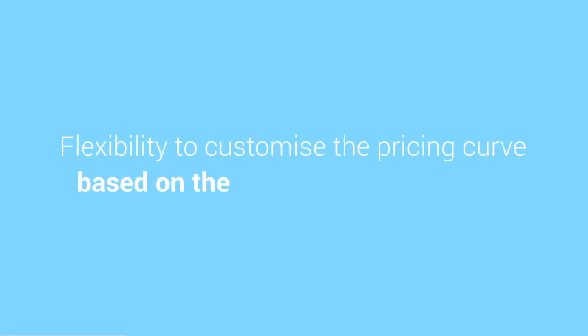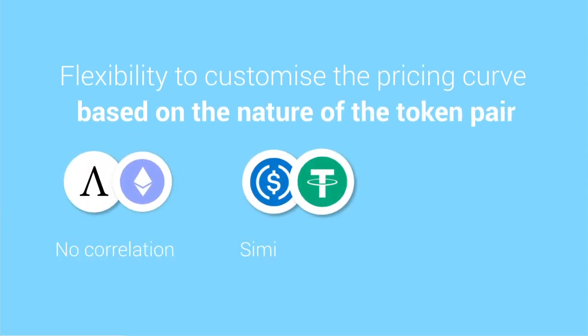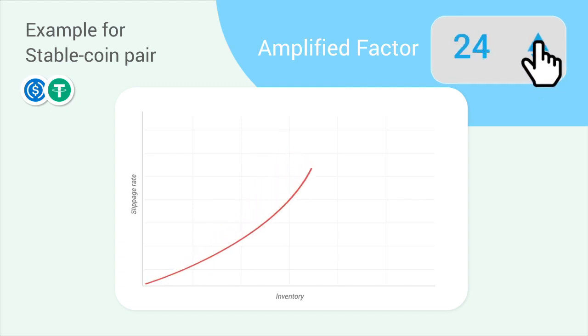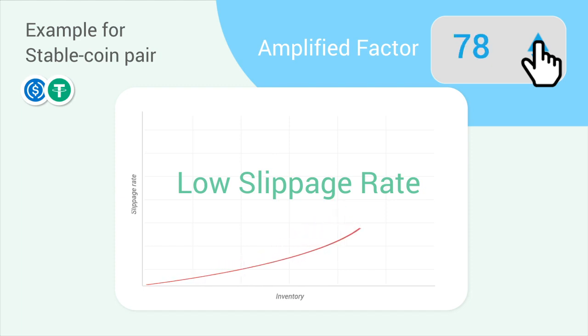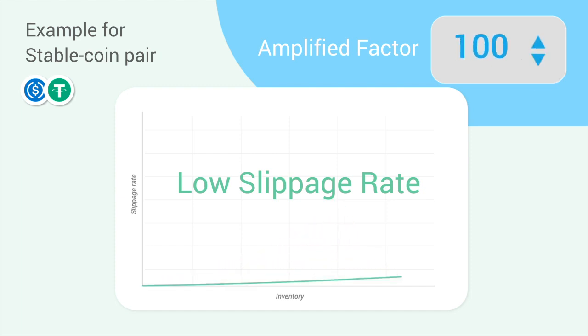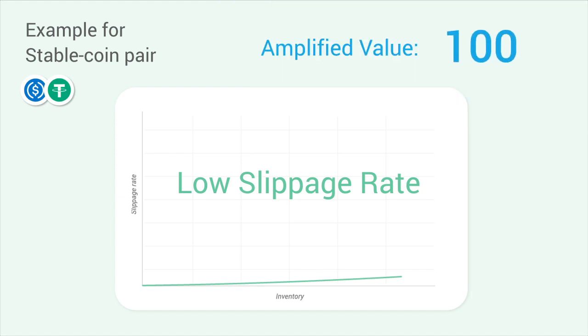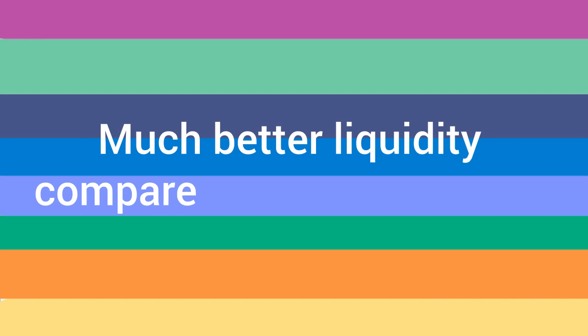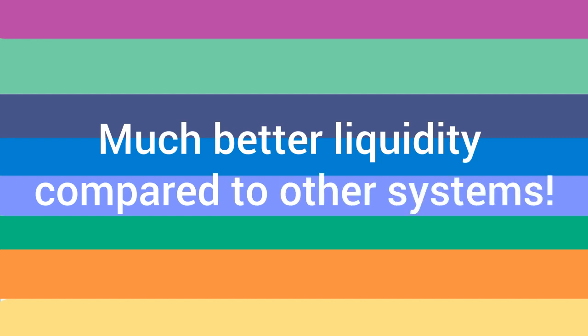The second novel mechanism is the Programmable Pricing Curve. Prior to pool creation, liquidity pool creators can customize their pricing curve based on the nature of the token pair to greatly improve capital efficiency and liquidity. For example, to boost liquidity of a stablecoin pair, we can create a curve that has an amplification factor on each pool asset, which greatly amplifies its virtual balance and capital efficiency. If the amplification factor is 100, a $1 million pool will provide the same slippage as a $100 million pool. This means with the same amount of tokens, Kyber DMM can provide much better liquidity compared to other systems.